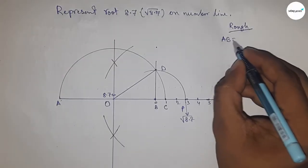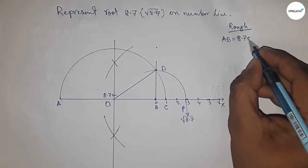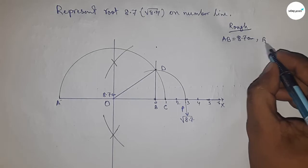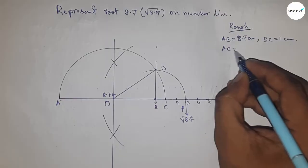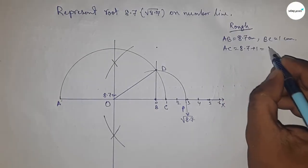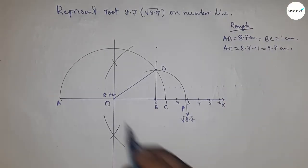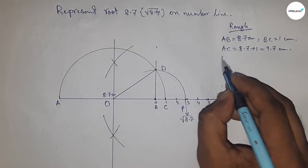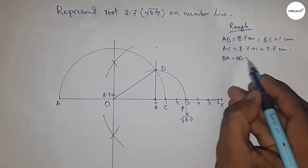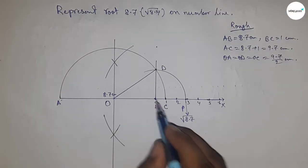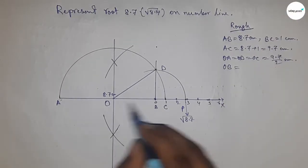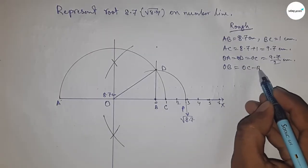Given: AB equals 8.7 cm, BC equals 1 cm, so AC equals 9.7 cm. The radius OA, OC, and OD equal 9.7 by 2 cm. The distance OB equals OC minus BC.